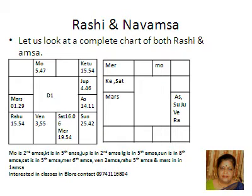Sun is in the eighth Amsa — the counting point for Sun is Capricorn, therefore it comes to Leo. Saturn's counting point is Libra itself, fifth Amsa, so it goes to Aquarius. Mercury has gone to the sixth Amsa — counting from Libra, it goes to Pisces. Venus is in the second Amsa — counting from Cancer, it comes to Leo. Rahu is in the fifth Amsa — counting from Aries, the fifth Amsa is Leo. Mars is in Capricorn — counting from Capricorn, Mars remains in Capricorn.